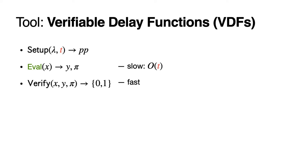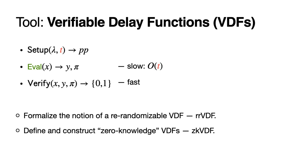In our work, we formalize the notion of re-randomizable VDFs and we define and construct zero-knowledge VDFs, which are VDFs where Y isn't revealed, but the verifier is given a proof convincing them that the prover has indeed computed Y or has knowledge of Y. These variants of VDFs will give us interesting properties for our short-lived proofs and signatures.